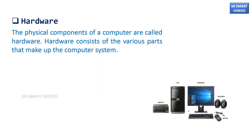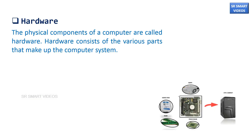The physical components of a computer are called hardware. Hardware consists of the various parts that make up a computer system.